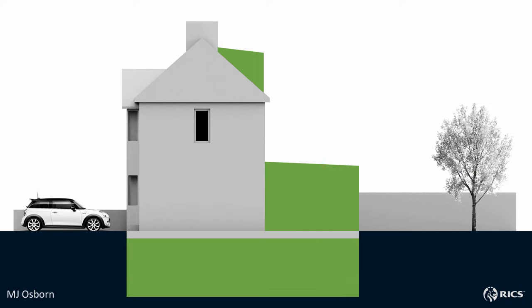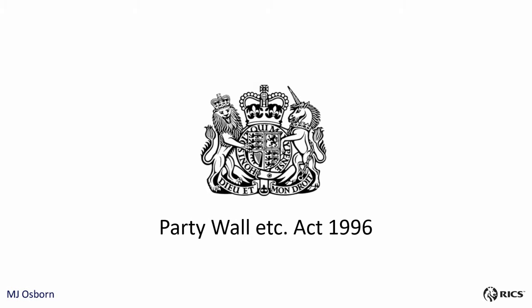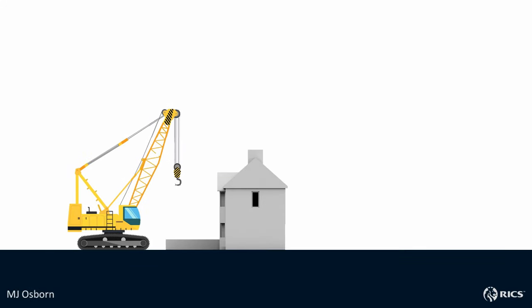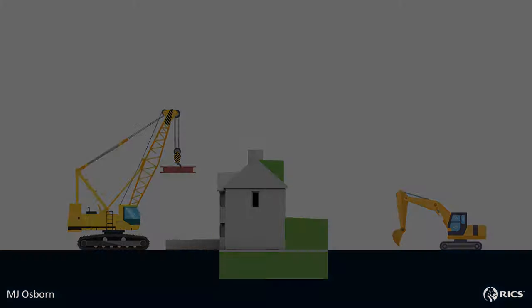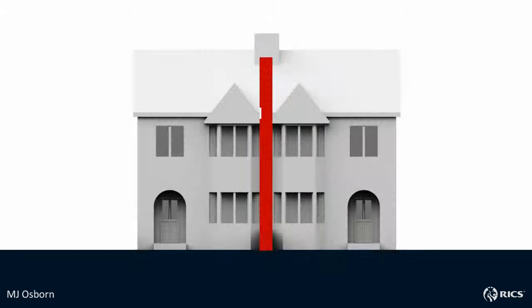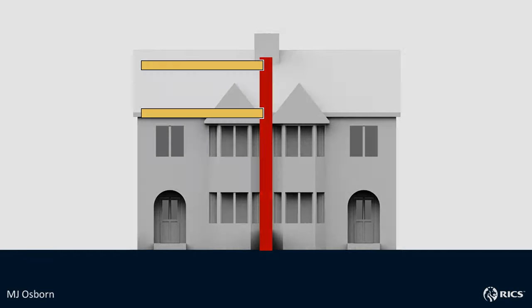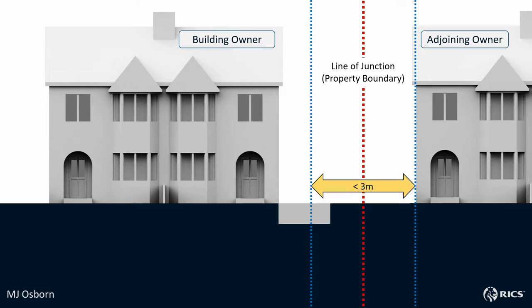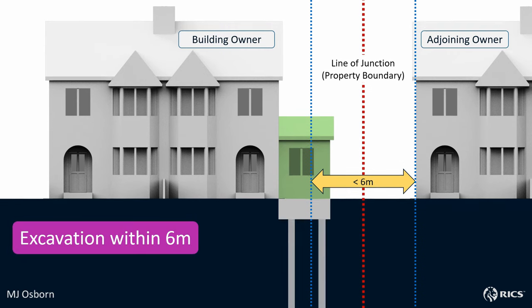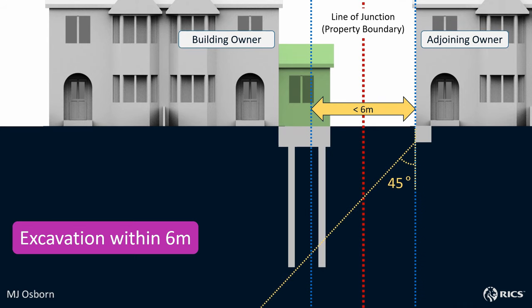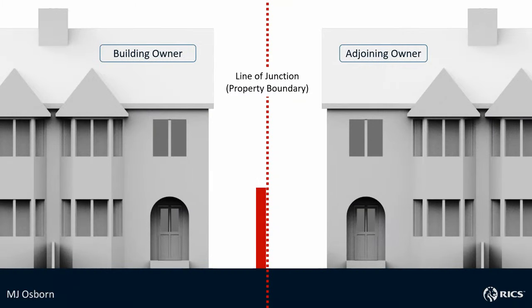If you are planning an extension, loft conversion, or digging a basement and it affects a party wall or structure, then you need to be aware of the Party Wall Act 1996. The Act sets out the rights and obligations of building owners. Examples of work covered include construction, excavation, repair and alterations of party walls, removal of chimney breasts, cutting pockets into a wall to insert beams, excavation within three meters of an adjoining owner, and within six meters if any part of the works extend below a 45-degree line drawn from the adjoining owner's footings or other foundations.